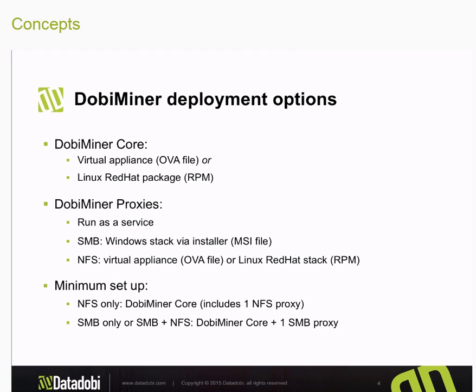For the SMB proxy, we don't redistribute Windows since it's not an open source operating system, so the approach there is a small Microsoft installer file — an MSI file — that installs a small service onto an existing Windows server. This Windows server can be a virtual machine or a physical server. In both cases the proxies run as a small service on those particular servers and then they communicate over IP back to the Dolby Miner core.